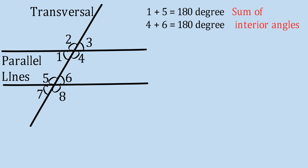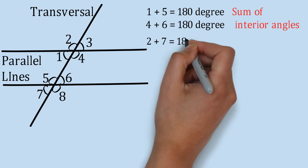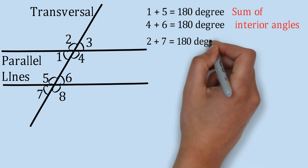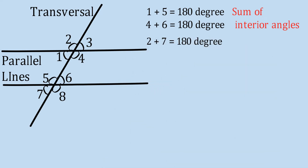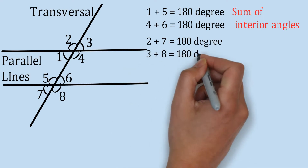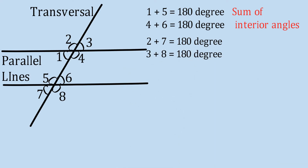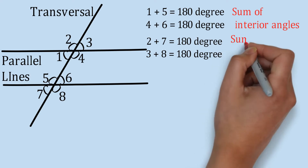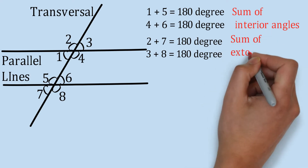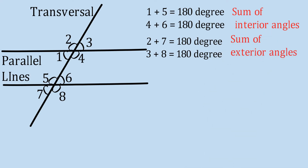Similarly, angle 2 plus angle 7 equals 180 degrees, and angle 3 plus angle 8 equals 180 degrees. Why? Because these are exterior angles to each other. So the sum of exterior angles is also equal to 180 degrees. Just remember that always.